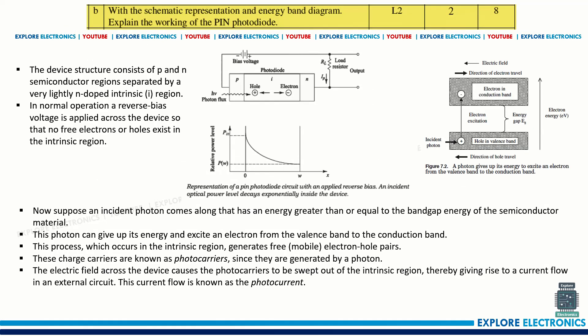With schematic representation and energy band diagram, explain the working of a PIN photodiode. The PIN photodiode structure and energy band diagram are shown. You need to draw both diagrams first, then write the working principle, and also explain the energy band diagram. It carries four marks each.